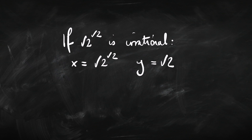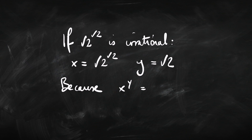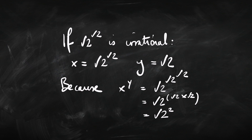If, on the other hand, root 2 to the power of root 2 is irrational, we need to do a little more work. We could take x to be root 2 to the power of root 2, and y to be root 2, since we know root 2 is irrational. Then x to the power of y is root 2 to the power of root 2, all raised to root 2. When you have a power to a power, that's the same as multiplying the exponents — so that's root 2 to the power of root 2 times root 2. But root 2 times root 2 is just 2, so that equals root 2 squared, which is 2 — obviously a rational number.